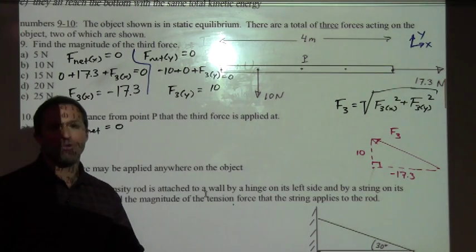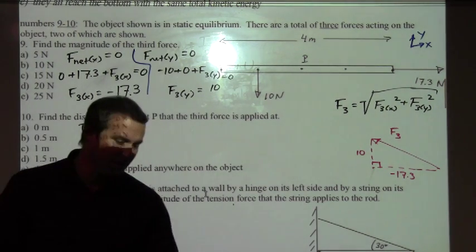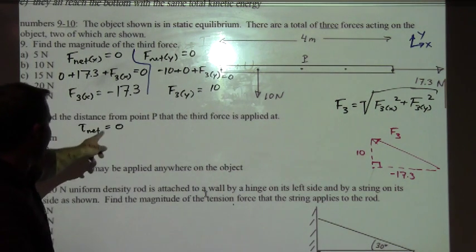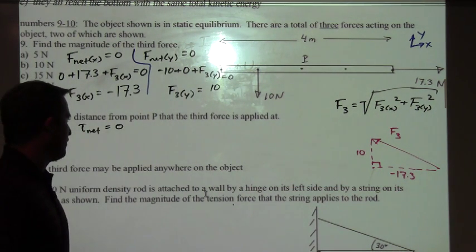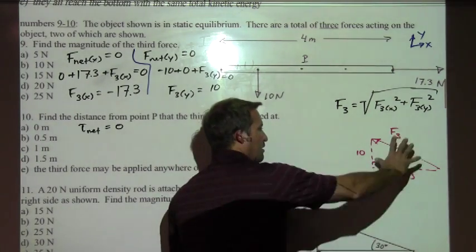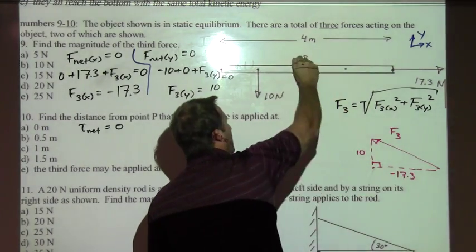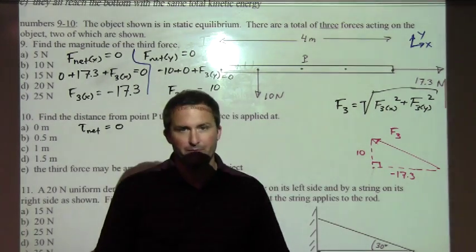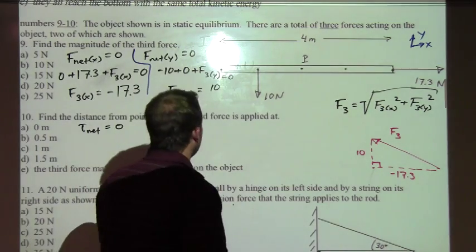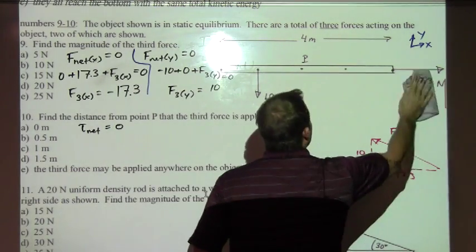We're ready now to move on. We didn't have to use our torque equation yet, but we will need it in a moment to answer the next question. Find the distance from point P that the third force is applied. We know what the third force arrow looks like now. We need to take that arrow and apply it to this object somewhere and make the net torque zero. I'm going to clear off some of this work here.